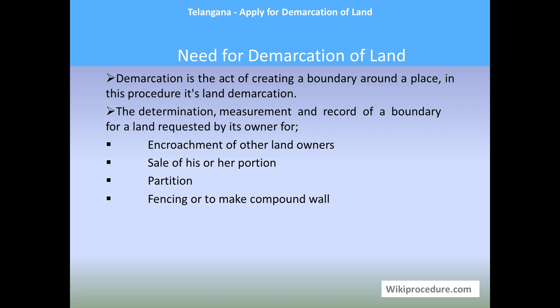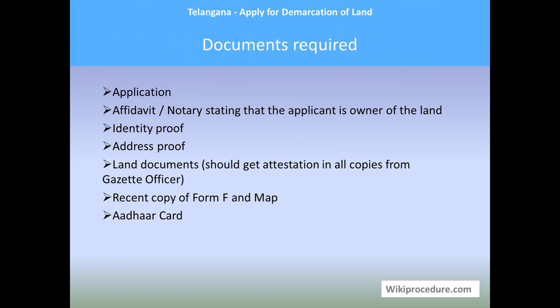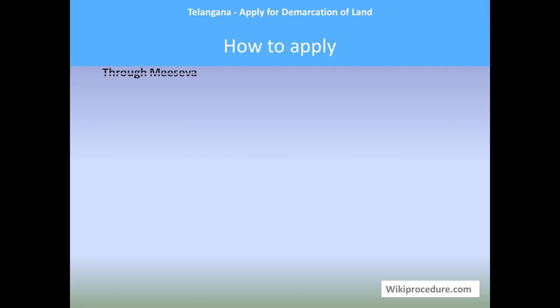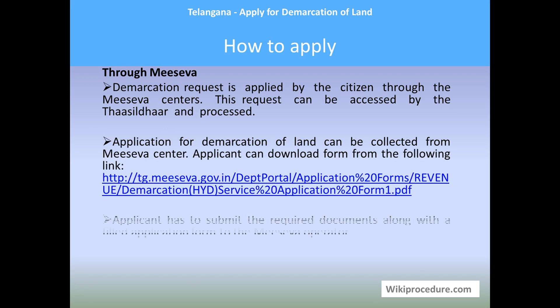Documents required: an application stating that the applicant is the owner of the said land; identity proof of the applicant; address proof of the applicant; land documents containing the survey number and adjacent land details; attested copies from the Tahasildar officer; a recent copy of Form F and M; and a map of that particular area.